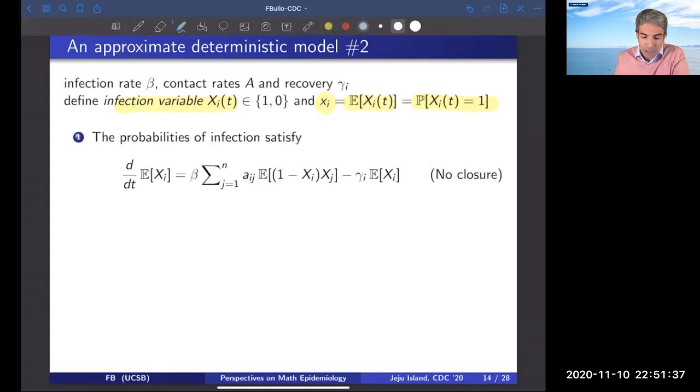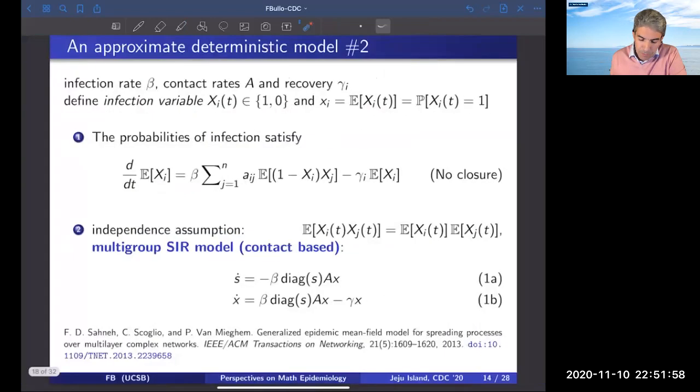When one performs this analysis, it's well known that one obtains a differential equation for the evolution of these quantities which does not satisfy moment closure. So it is in general difficult to obtain an exact nonlinear model that can capture the evolution of the expected value of the stochastic Markovian model. In mean field analysis, there is a so-called independence assumption, which is of course only approximately satisfied in some cases, or maybe it's a poor approximation in others. This approximation does lead to a closed form nonlinear ordinary differential equation defined over a network. I'm going to refer to this as the multi-group SIR model. It's model two, based upon contact.